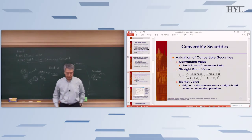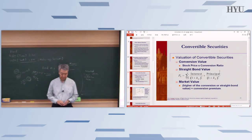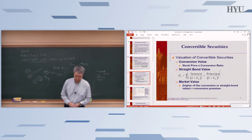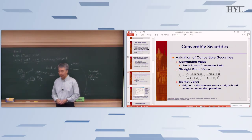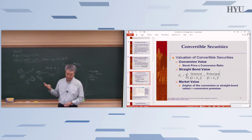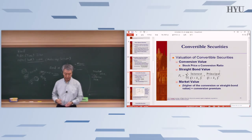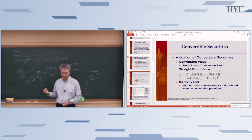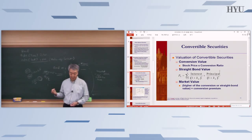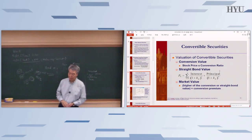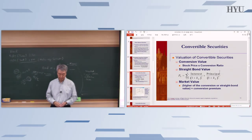Then there is the straight bond value — the present value of the bond, which you've seen many times. It's the present value of interest payments and principal (par value), discounted at rate KD over N remaining periods. Depending on those four values, you can calculate the present value of the bond — that's the straight bond value.